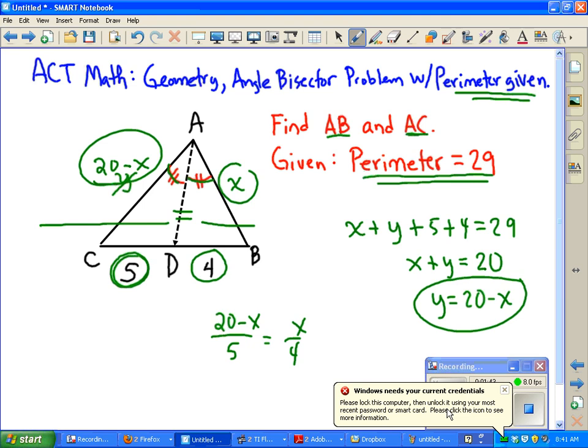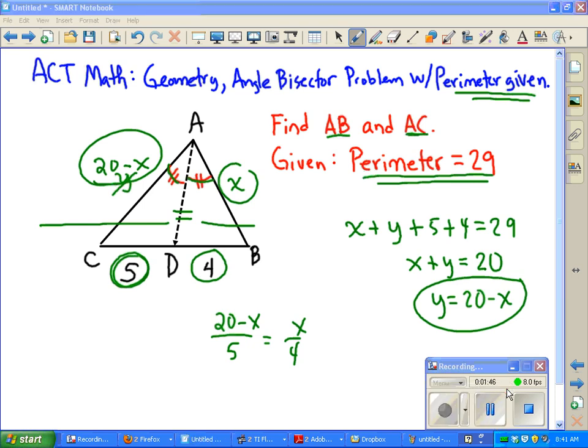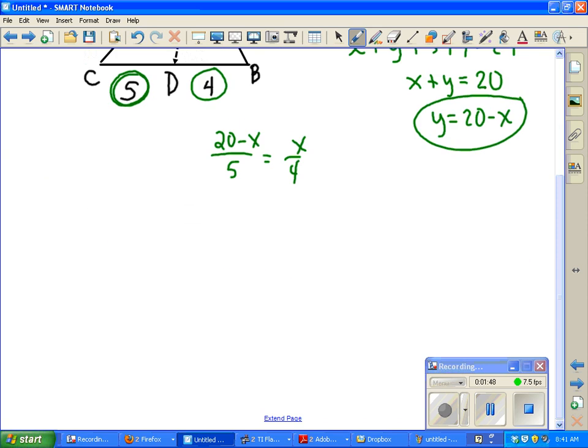If we do a little cross product here, you're going to get 5X equals 4 times 20 minus X. Using the distributive property, that's 80 minus 4X, which equals 5X.